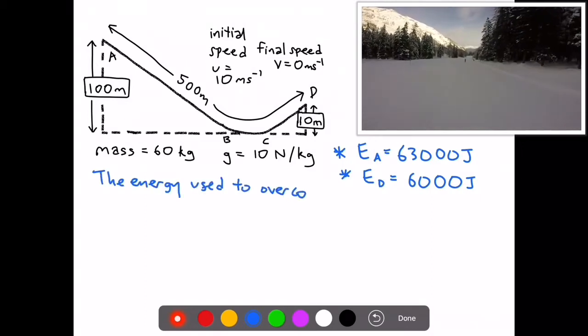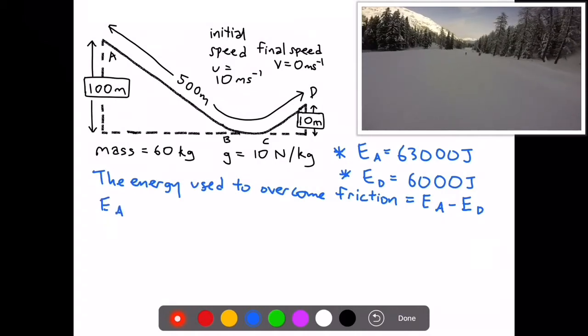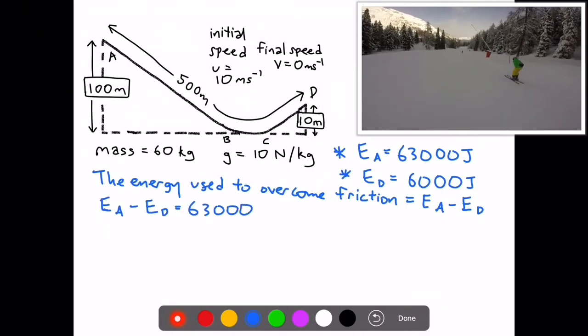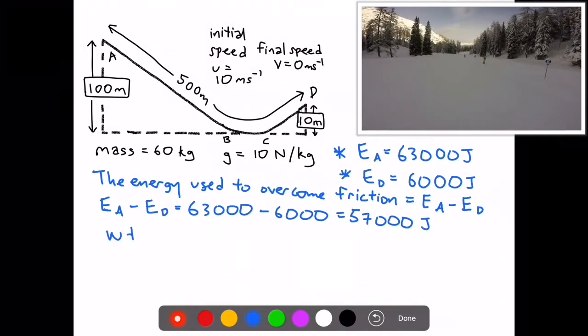Now the energy used to overcome friction will be equal to the energy at A minus the energy at D. The energy at A minus the energy at D is equal to 63,000 minus 6,000, equals 57,000 Joules.